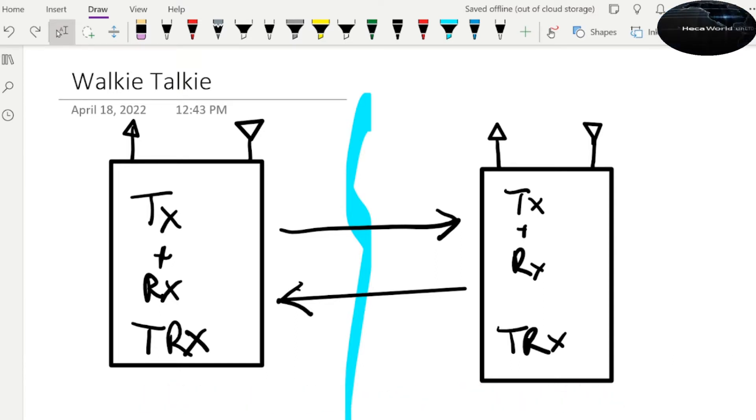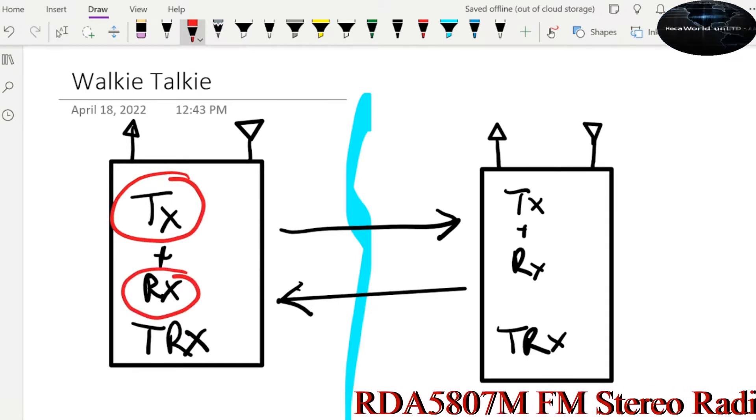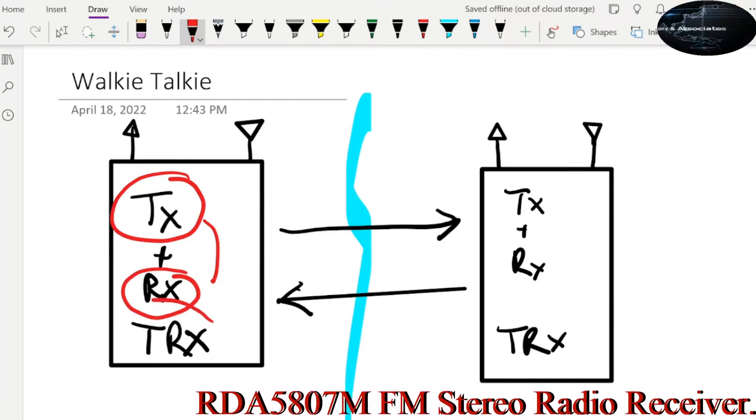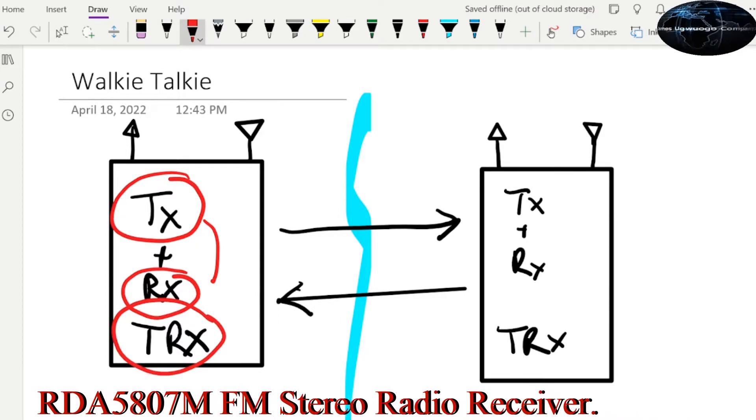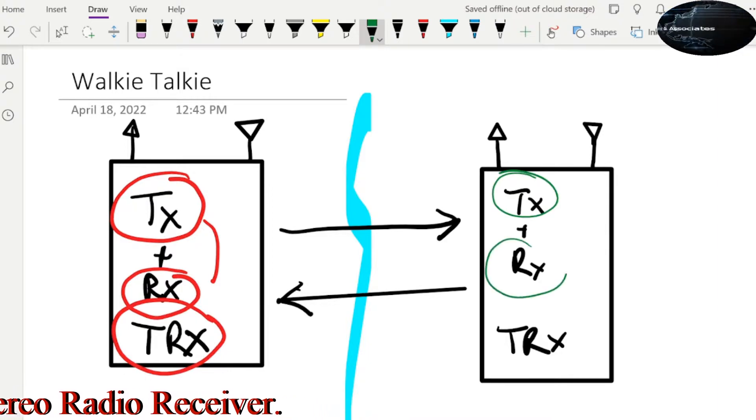Now what you're seeing on the screen right here is a box that is duplicated on the right side and on the left side. On the right side you will see a transmitter and the receiver. When you add both you get the TRX. Likewise on the left side you have the transmitter and the receiver. When you add both you also get TRX.